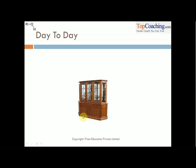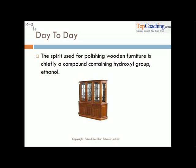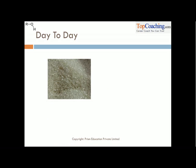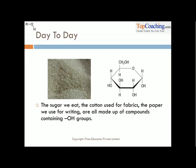The polish used to polish wooden furniture contains ethanol as the main ingredient. So what we are trying to show here is how alcohols are present in our day-to-day life. The wooden polish contains alcohol. The sugar we eat — sucrose — is nothing but a compound with a couple of OH groups. The cotton used for fabrics as well as paper — all of these items used in our day-to-day life are composed of alcohols.